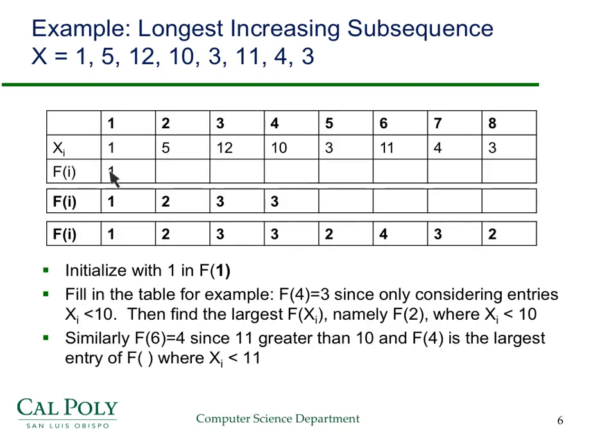Here we go. We start out with one, we're trying to compute that, and F of I will be one. Then we'll go to the five. Five, we use our recurrence relation. There's only really one earlier subsequence to check, and five is bigger than one, so we can increment. It's two. Twelve is bigger than five, so we can increment that. We get three.